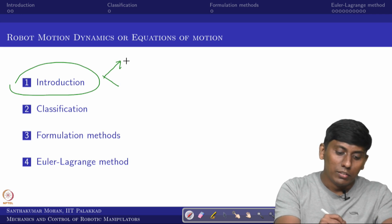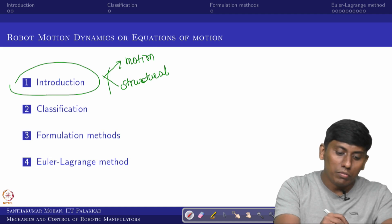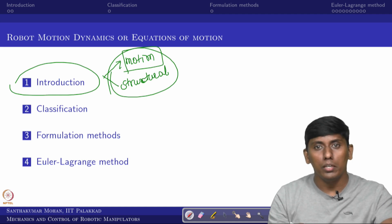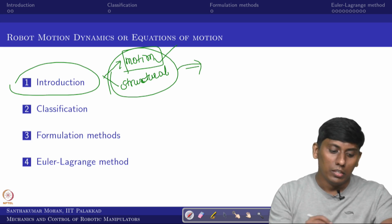Robot dynamics can be written as motion dynamics and structural dynamics. Both we are going to see, but this particular lecture is going to talk more about motion. The structural aspect will come in the manipulator design part. However, since this course is mechanics and control, you will be seeing more on motion — that is what this introduction covers.